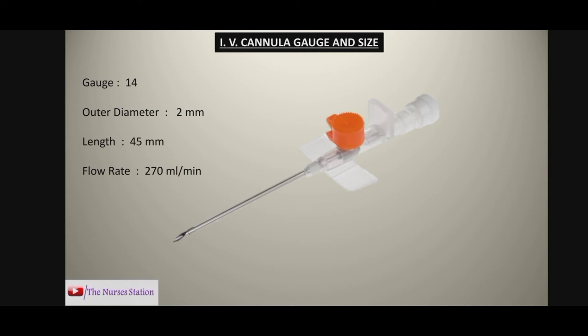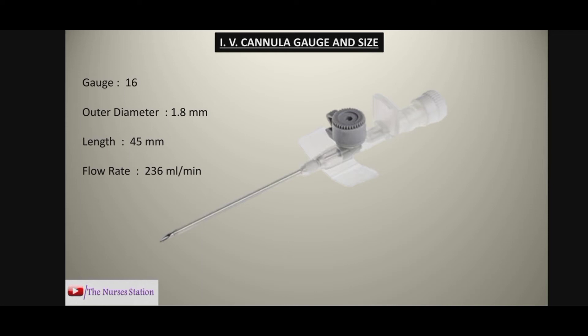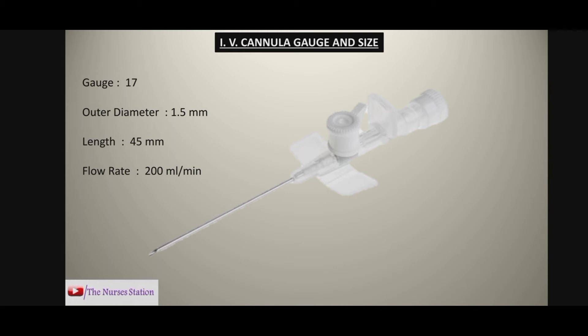The first is the orange colored cannula. This has a gauge size of 14, an outer diameter of 2 mm, a length of 45 mm, and a flow rate of 270 milliliters per minute. Then we have the gray colored cannula with a gauge size of 16, outer diameter of 1.8 mm, length of 45 mm, and a flow rate of 236 milliliters per minute.